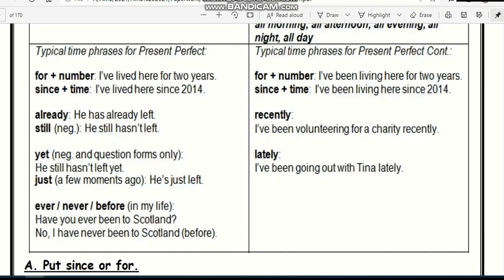But in present perfect continuous, typical time phrases: you're going to say for plus number. For example, I have been living here for two years. Then since plus time, for example, I have been living here since 2014. Recently: I have been volunteering for a charity recently. Lately: I have been going out with Tina lately.